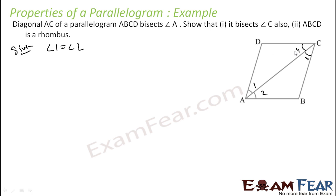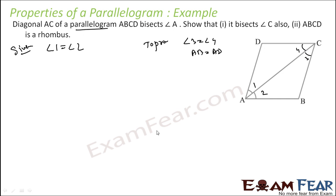We have to prove that AC also bisects angle C, that is angle 3 is equal to angle 4. So let's start: if angle 1 is equal to angle 2, we have to prove angle 3 is equal to angle 4.